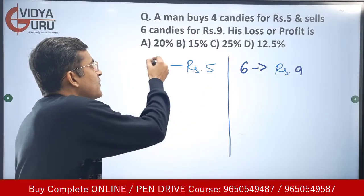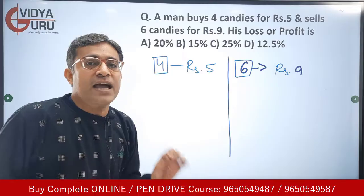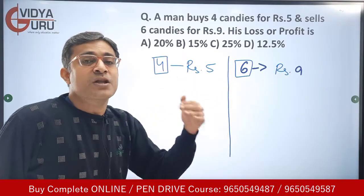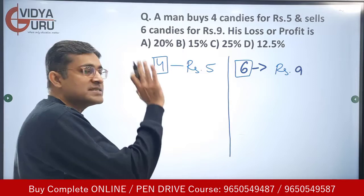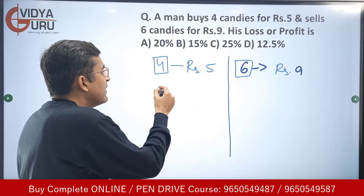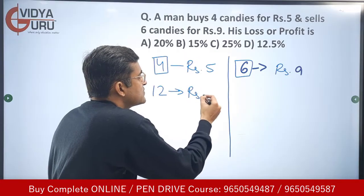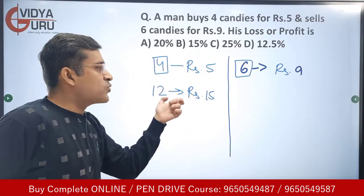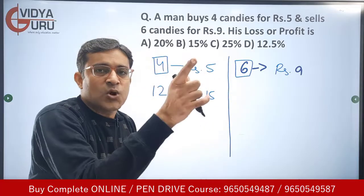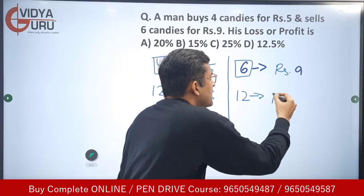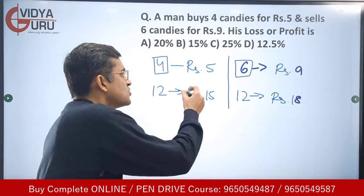But the number of candies is different in both cases, so let me make the number of candies equal. The LCM of four and six is twelve, so I will equate them to twelve candies. Twelve candies will be purchased for rupees 15 (since four candies cost rupees five, multiply by three). Similarly, six candies are sold for rupees nine, so twelve candies will be sold for rupees 18.